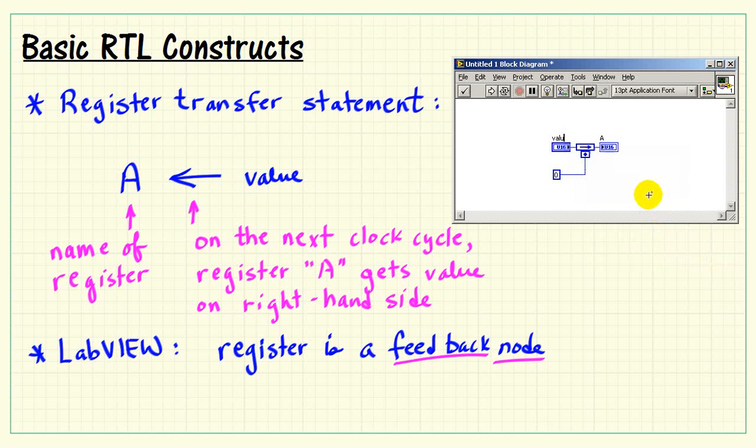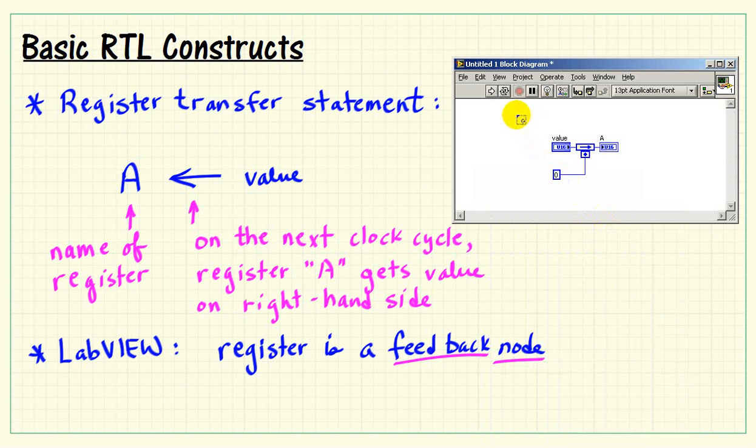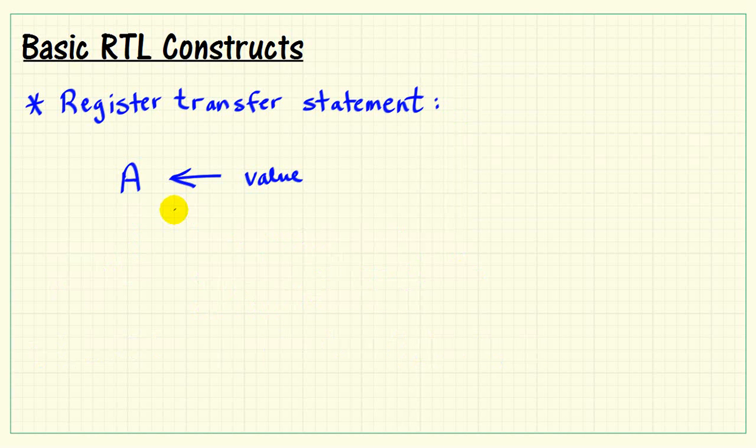To match the register transfer statement that I have right now, we could say that the register gets filled with value that's presented on that control called value. Now to make time advance, that is on each clock cycle, it gets filled with that value. We can wrap this in a while loop. And that's the basic implementation in LabVIEW of our very simple register transfer statement.